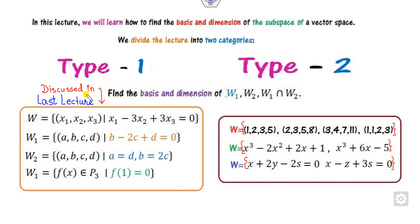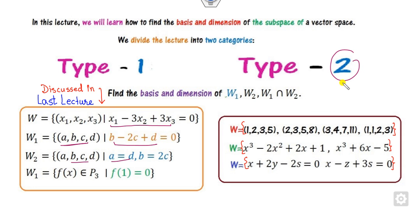Last lecture discussed Type 1, where you have to find the basis and dimension of problems where some condition is imposed on the vectors. Now we will discuss Type 2 in today's lecture, where there is no condition imposed on the vector — how you can find the basis and dimensions of the vectors.